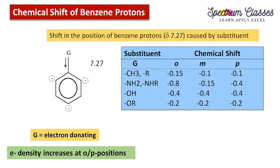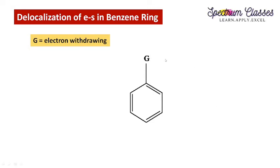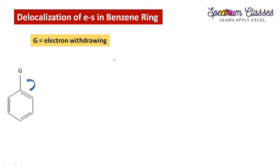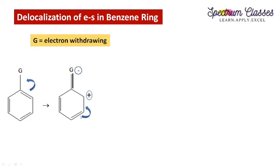Now we look at the effect of electron withdrawing groups on the chemical shift of benzene protons. An electron withdrawing group withdraws electron density from the ring. The existing double bond shifts towards the withdrawing group's side, forming a new pi bond. Because it receives excess electrons it acquires a negative charge, and the carbon donating the electrons acquires a positive charge. Again, since we started with a neutral molecule, plus and minus must balance to give a neutral molecule.